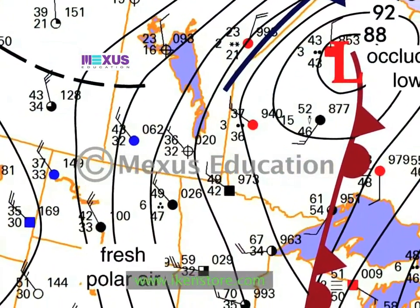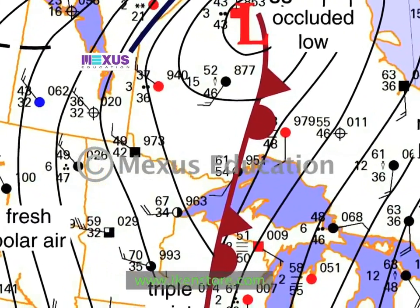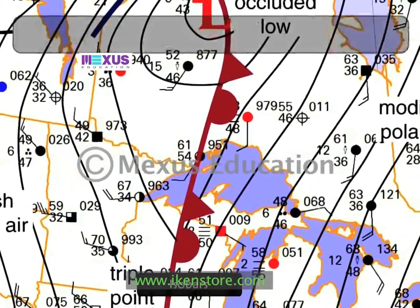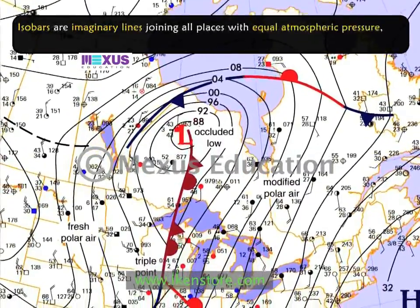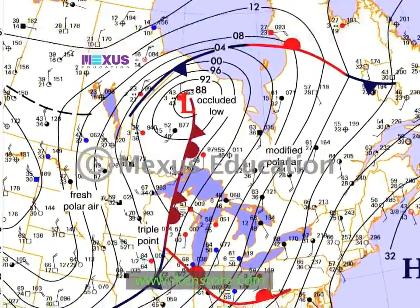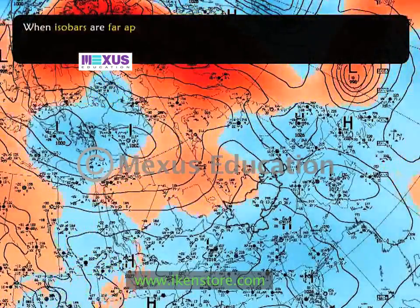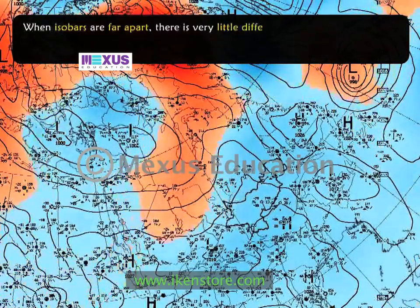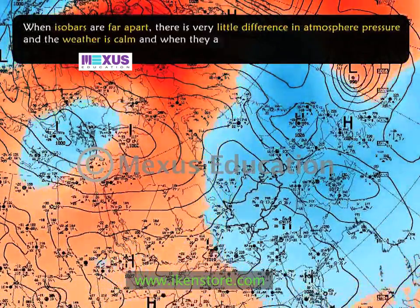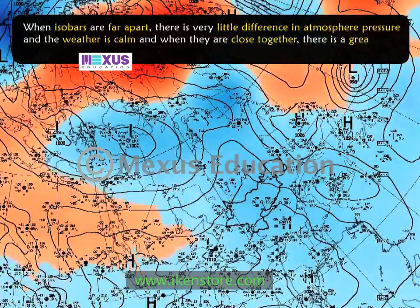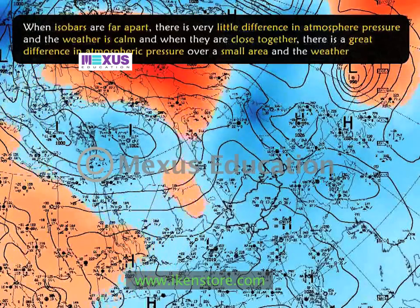Have you ever seen a weather map? There are curved lines running over continents and oceans. These lines are called isobars, which are imaginary lines joining all places with equal atmospheric pressure, if these places were at sea level. Isobar means equal weight. When isobars are far apart, there is very little difference in atmospheric pressure, and the weather is calm. And when they are close together, there is great difference in atmospheric pressure over a small area, and the weather is stormy.